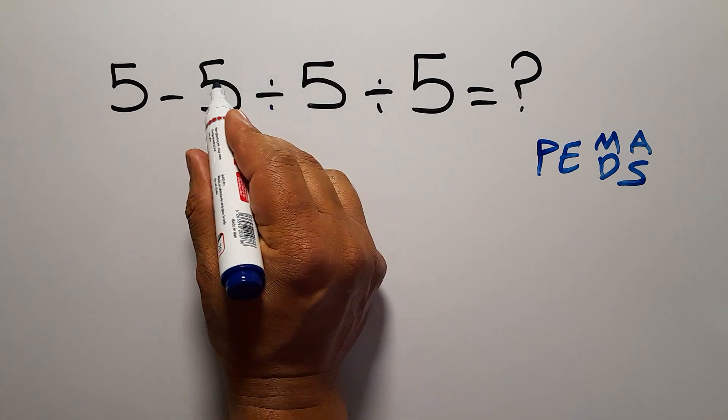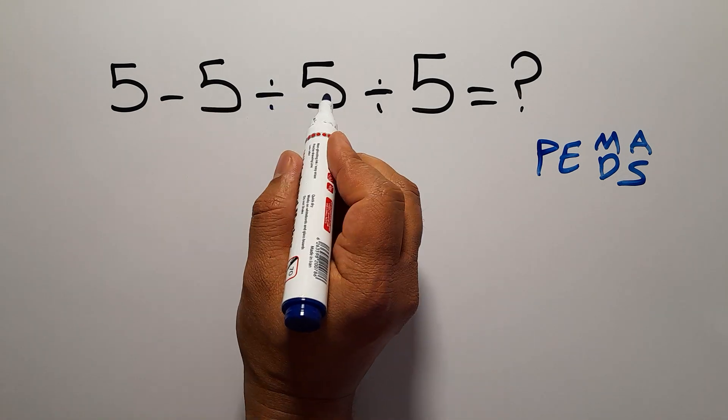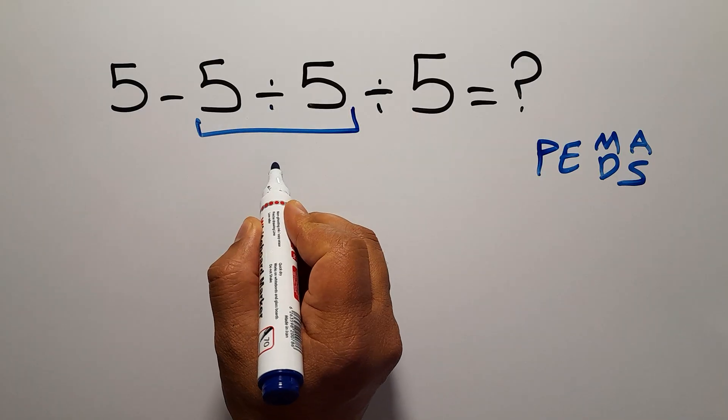So first, this division, 5 divided by 5, which equals 1.